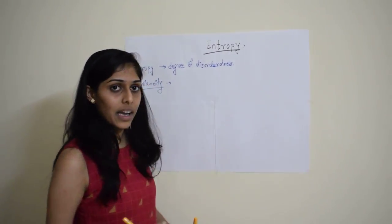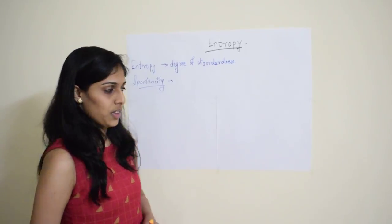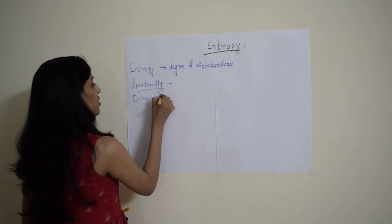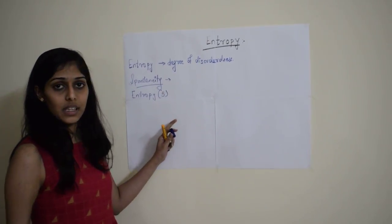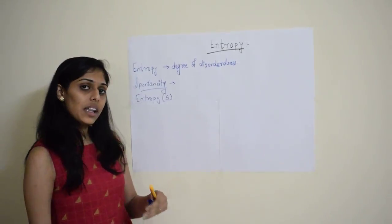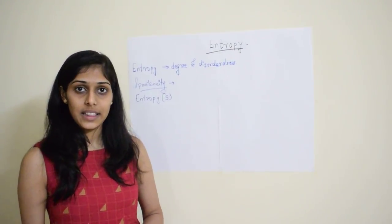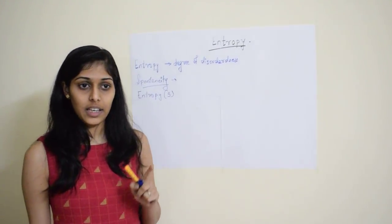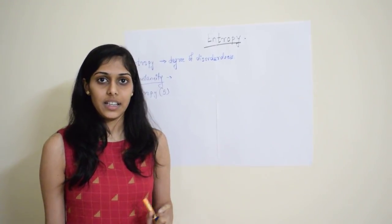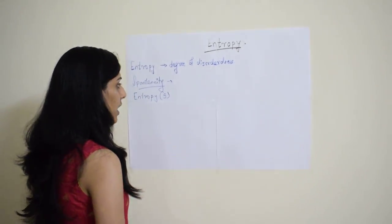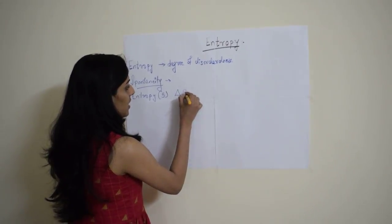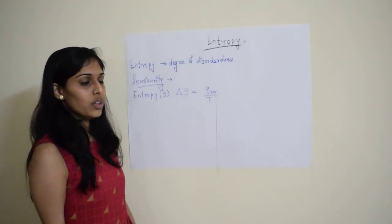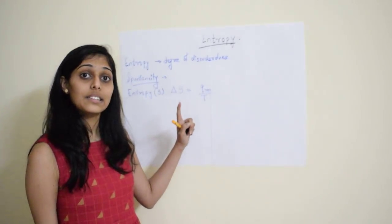Let us discuss what entropy is through its mathematical equation. Entropy is also represented by the symbol S, which is its thermodynamic symbol. Like other thermodynamic properties such as enthalpy and internal energy, individual entropy cannot be defined instantaneously — it has to be defined over a change. So let us define delta S as Q reversible divided by T. Note that it is T, meaning temperature, not delta T.